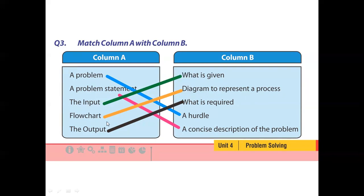Next, flowchart is a diagram to represent a process, matched with a brown line. Last, output means what is required — the final goal after following all the steps, which is the solution. This is matched with 'what is required,' shown in black line.